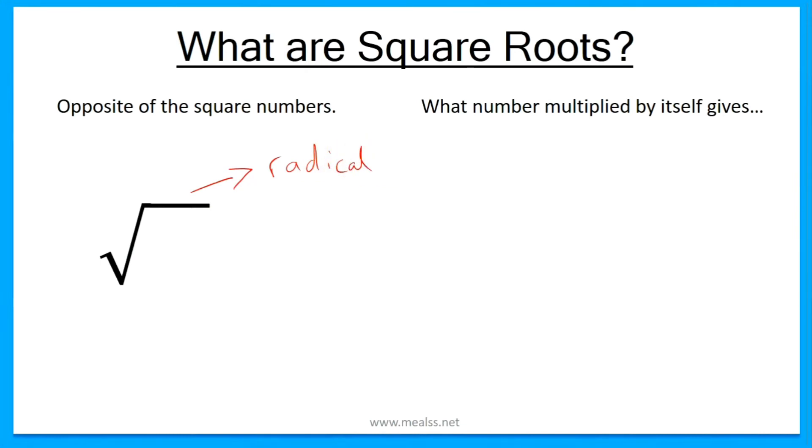So what you need to do is think about it in this way. Let's say, for example, we are looking for the square root of 100. Ask yourself this question: what number multiplied by itself gives 100? And the answer for that should be 10, because 10 squared equals 100. So the square root of 100 is 10.